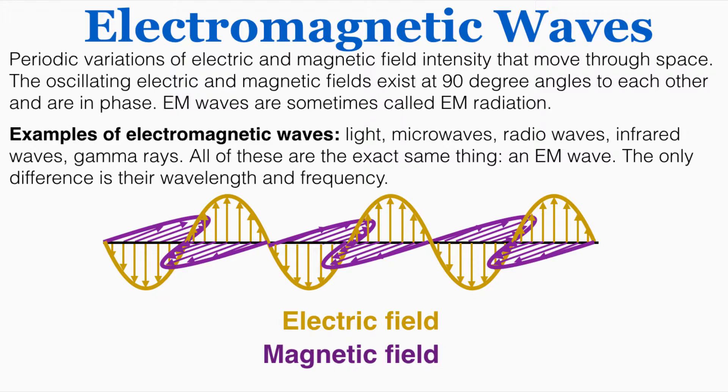Microwaves, radio waves, infrared waves, gamma rays are all examples of electromagnetic waves. They're all fundamentally the exact same thing. The only difference between a wave of light and a radio wave or a gamma ray is the wavelength and frequency of the wave.